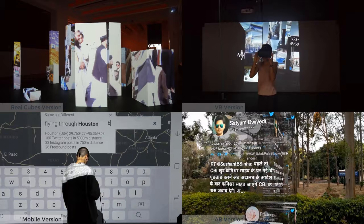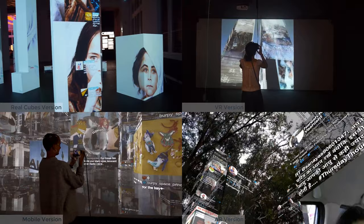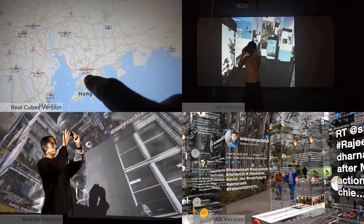In 10,000 Moving Cities, all cities have identical buildings. But the information and building facades are always different. They are searched in real-time on social networks about a chosen location — not censored, not chosen by a certain community, rather produced by the public.